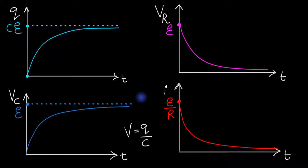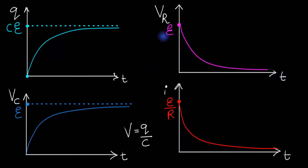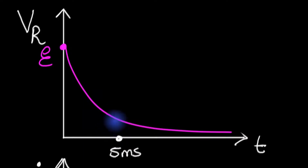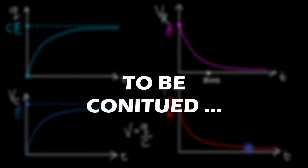In the next video, we're going to do a full mathematical analysis — so if you ask what happens after five milliseconds, I should be able to tell you exactly how much the voltage across the resistor reduces to. We'll work that out in the next episode. To be continued — see you next time.